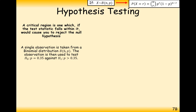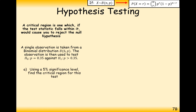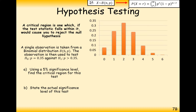Let's have a look at a question. A single observation is taken from a binomial distribution with six trials and a probability of p. The observation is used to test the null hypothesis where the probability is 0.35, against the alternative hypothesis that the probability is more than 0.35. Using a 5% significance level, find the critical region for this test, and for part b, state the actual significance level of this test.